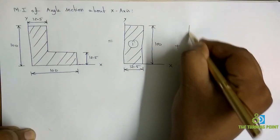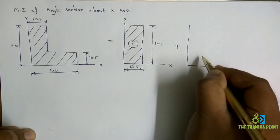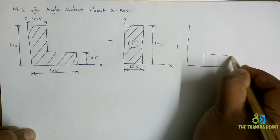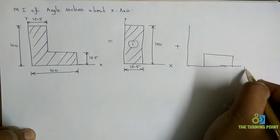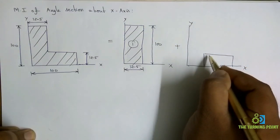If I add this one to another geometry, then I can have the complete L-section.